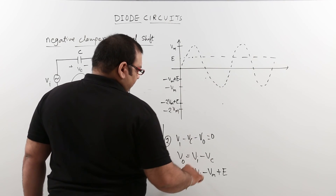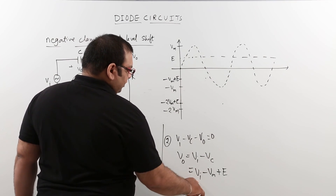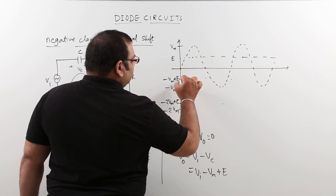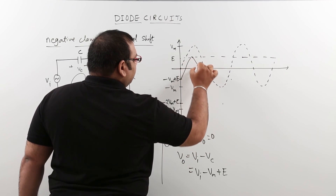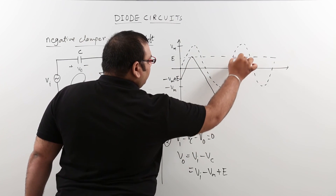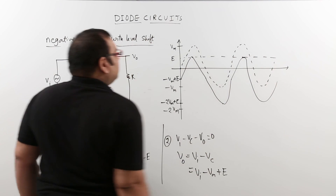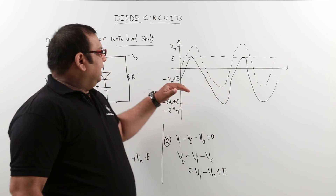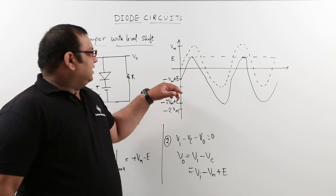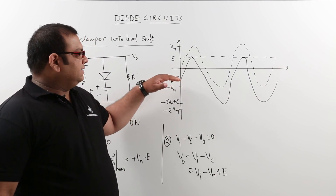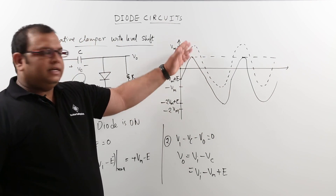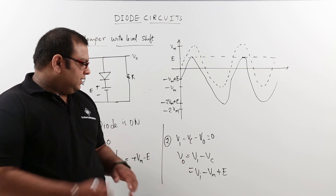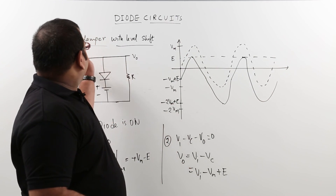When input returns to 0, output returns to minus Vm plus E. So this output waveform is the same shape as the input waveform, but the DC level is shifted to minus Vm plus E. The waveform is identical to the input with the DC level shifted — this is how we analyze the negative clamper with level shifter circuit.